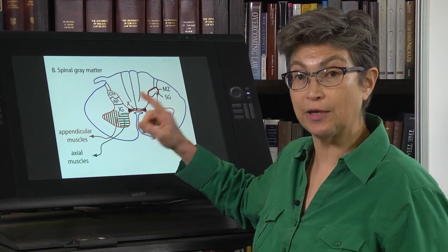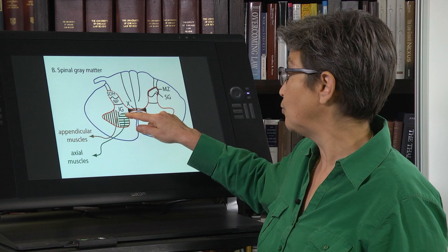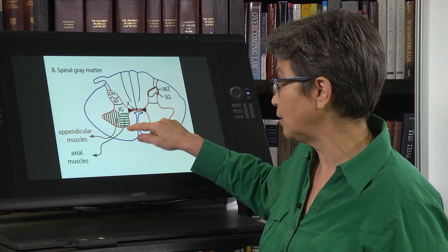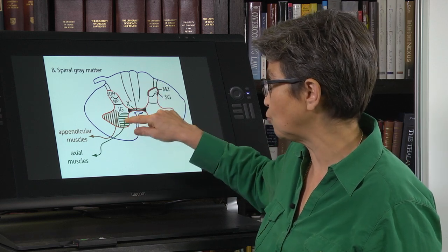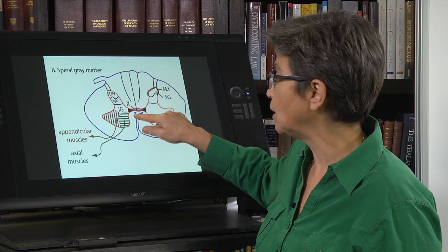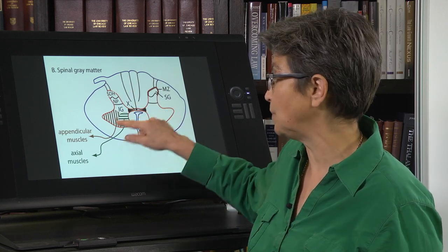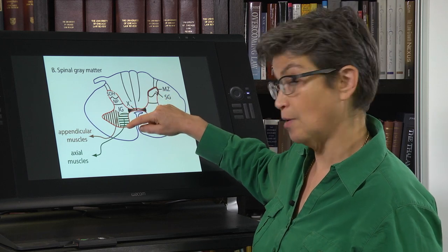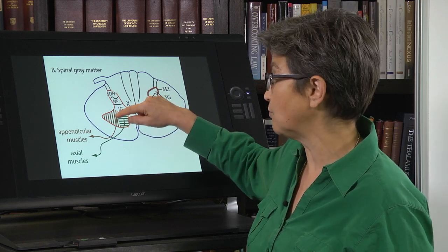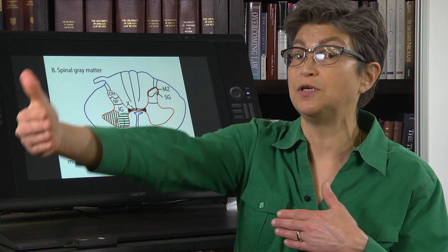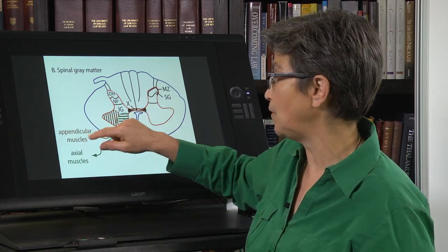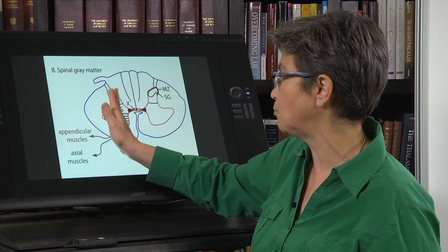One of the big ways in which you're going to figure this out is what we touched on at the very end of the last video, which is that in the ventral horn—this is the dorsal horn, this is the ventral horn, sensory motor—in the ventral horn, the motor neurons that innervate axial muscles are located medially, and those that innervate appendicular and progressively more distal musculature are situated more laterally.